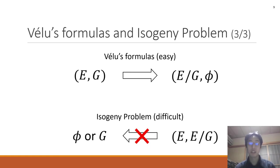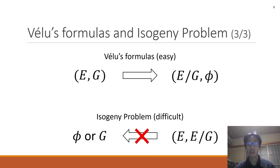Similarly, this computation is easy by using Vélu's formulas. However, this computation is hard even using quantum computers. Isogeny-based cryptography is based on this asymmetry.